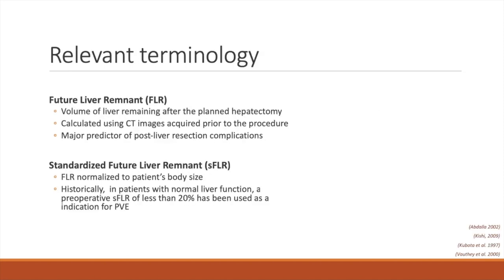Some relevant terminology for understanding this procedure is listed below. The first is future liver remnant, or FLR. This refers to the volume of liver that will be remaining after the planned hepatectomy. It is calculated using CT images acquired prior to the procedure and is a major predictor of post-liver resection complications.